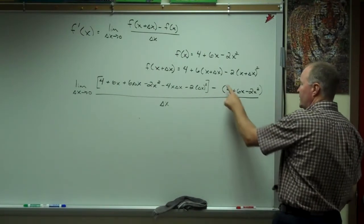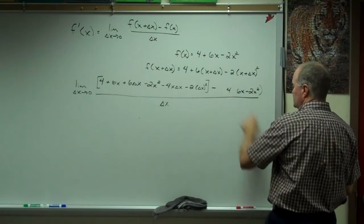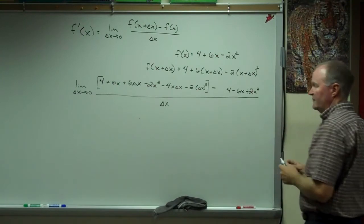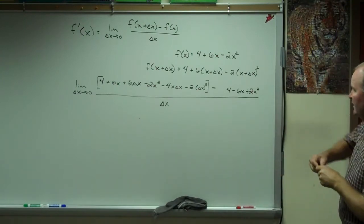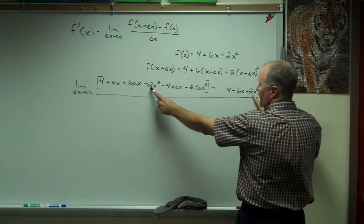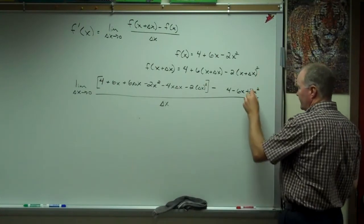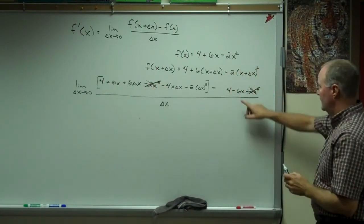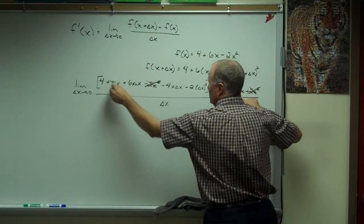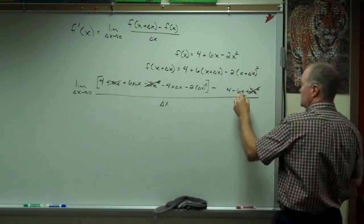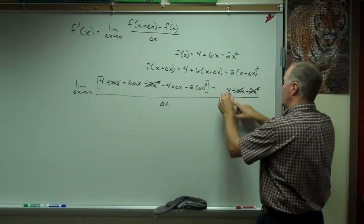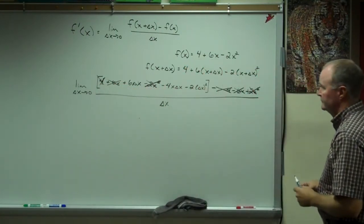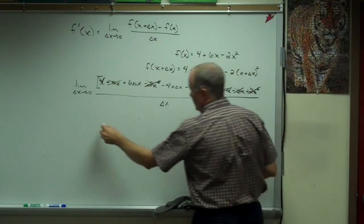This is subtraction, so I'm going to go ahead and subtract that. And then make that positive. That makes my life a little easier. Because if I look over there, 2x squared and negative 2x squared. Gone. Gone. Negative 6x. Positive 6x. Negative 4, positive 4.